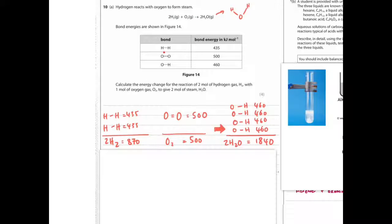Oxygen, you just have 1O2, this is 1O2, so it's just 500. So you've got 500 here. So if you add these together, you have the energy on this side stored in the bonds.